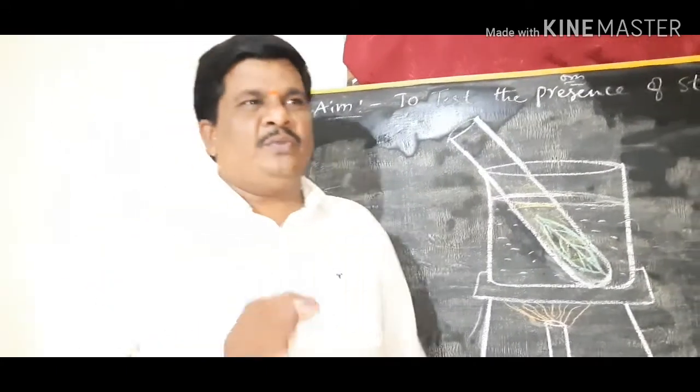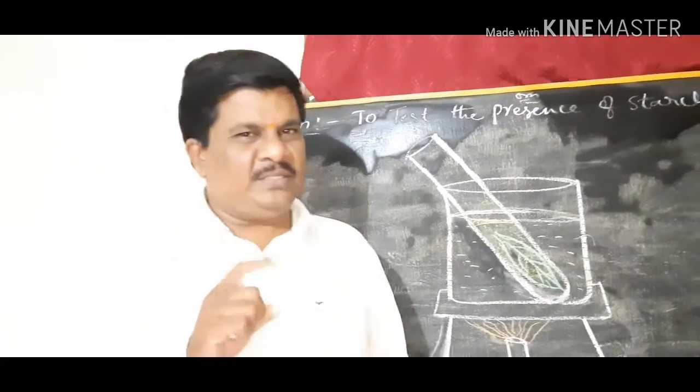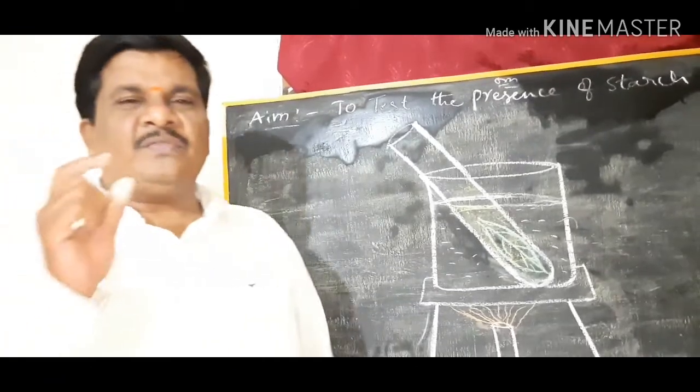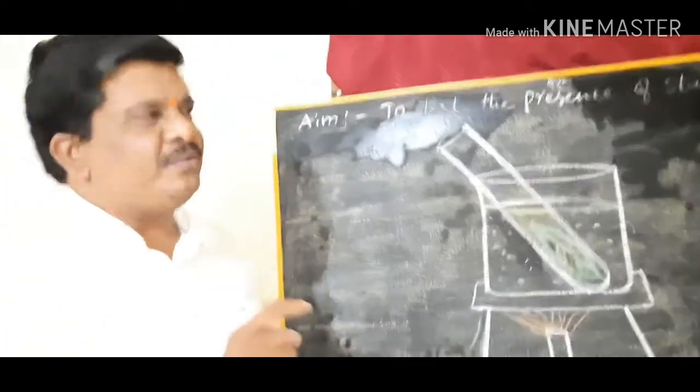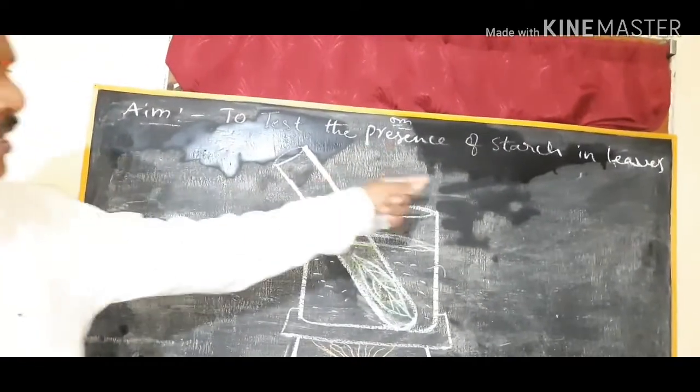We have to prove that plants perform photosynthesis. When plants perform photosynthesis, glucose is formed. The glucose is stored in the form of starch. That's why we have to test the presence of starch in leaves. So let us see how to test the presence of starch in leaves.